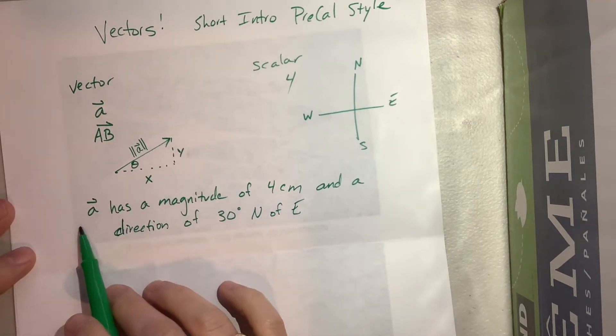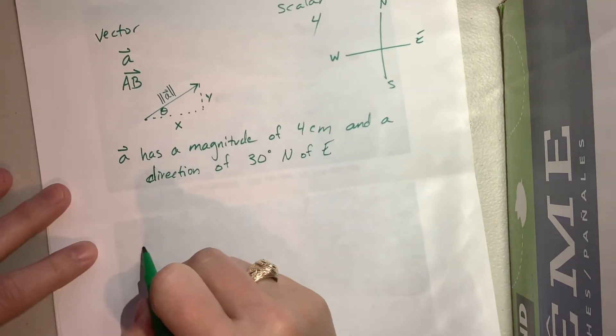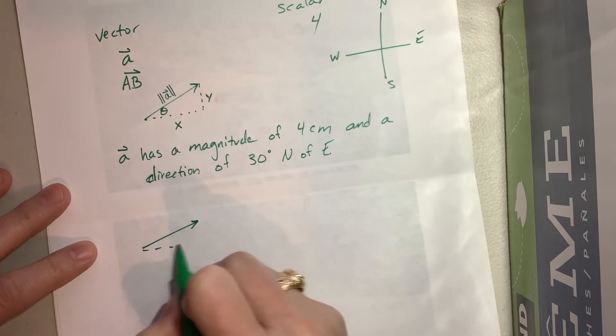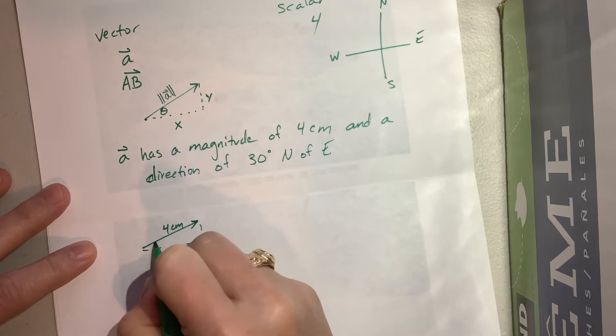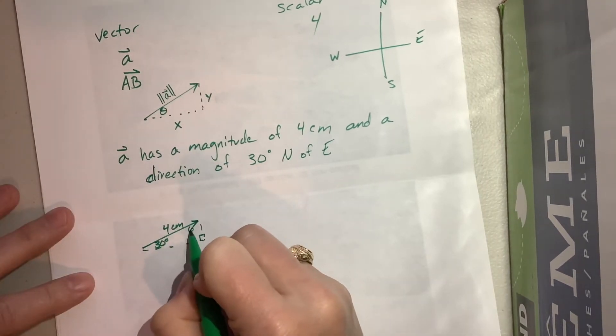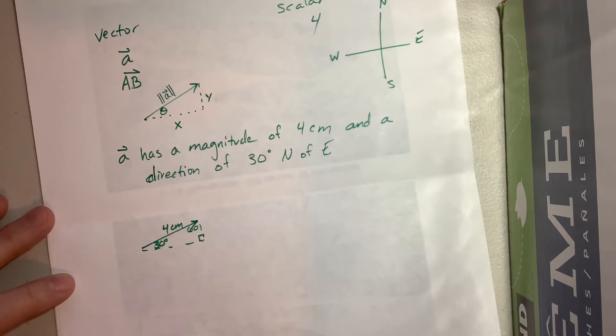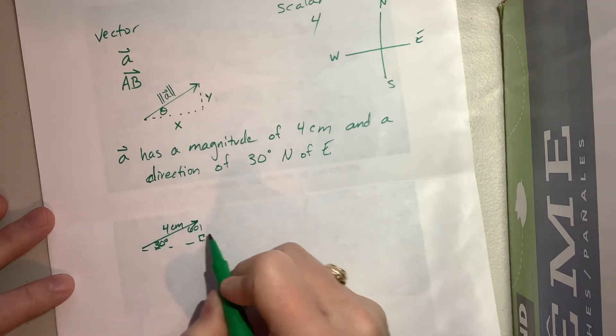So I could say that this is 30 degrees north of east. So notice like that's a little 30 degree, it's going here's east, it was going east but now it's going north of east. So it's 30 degrees north of east is kind of what I'm describing there. So if I say that vector A has a magnitude of four centimeters and a direction of 30 degrees north of east I can find its x and its y components.